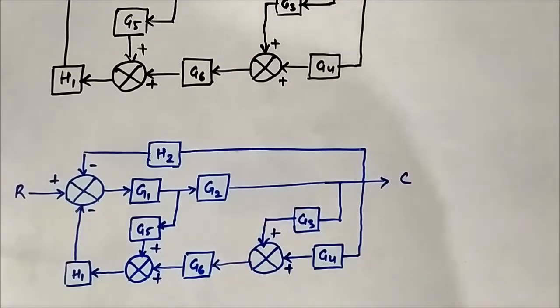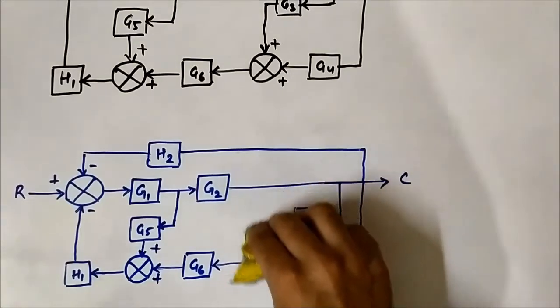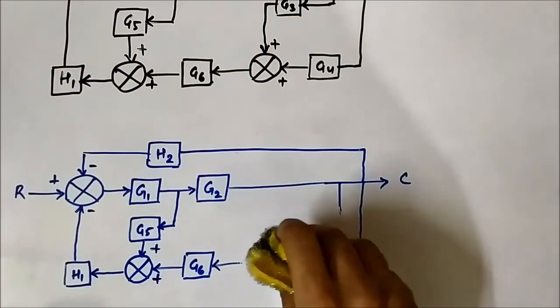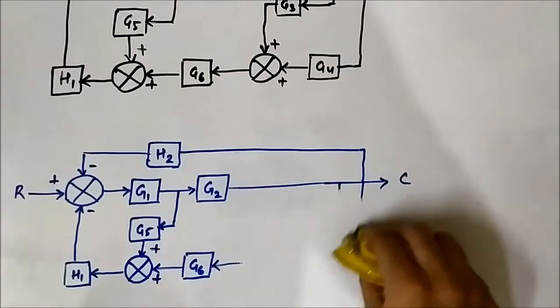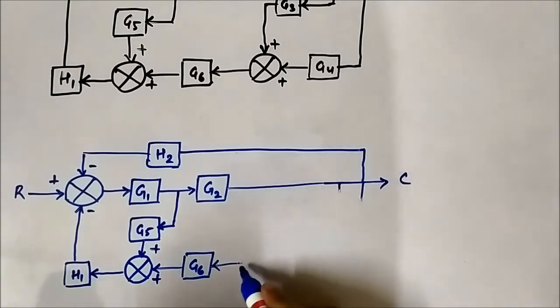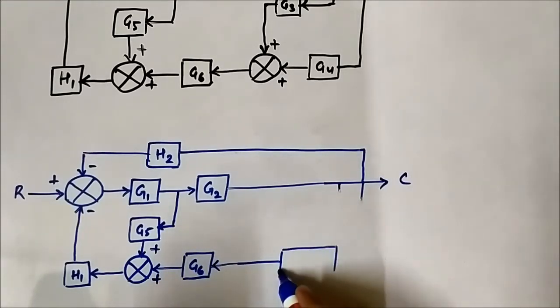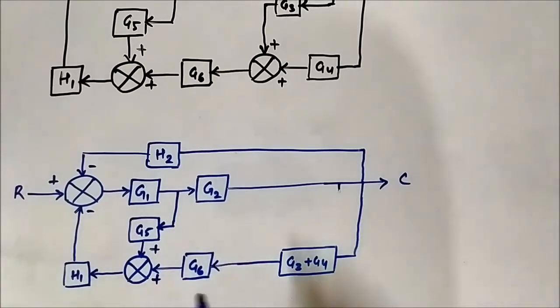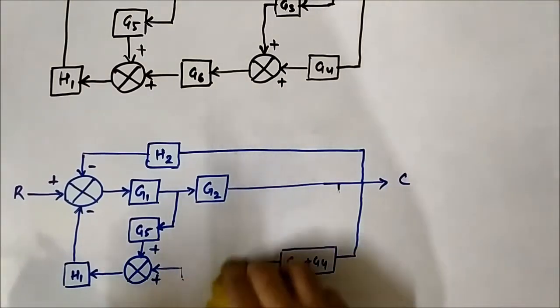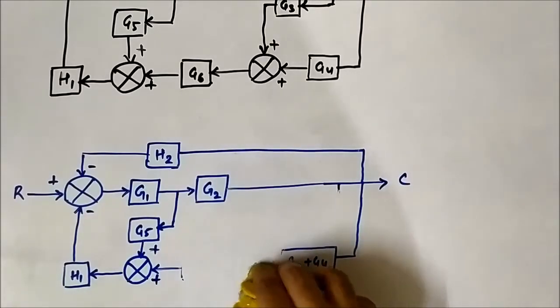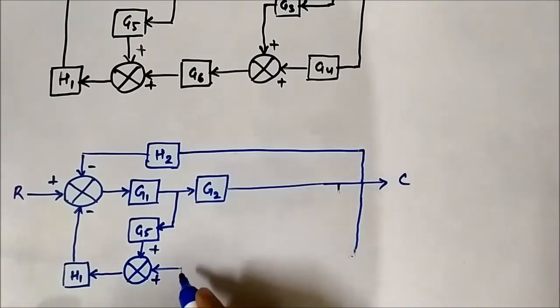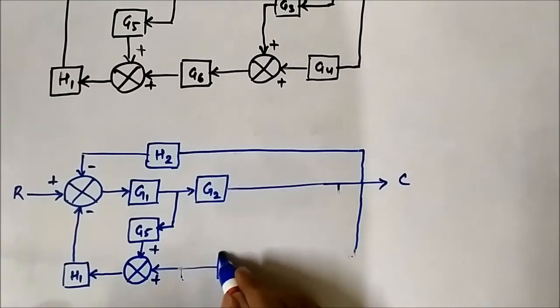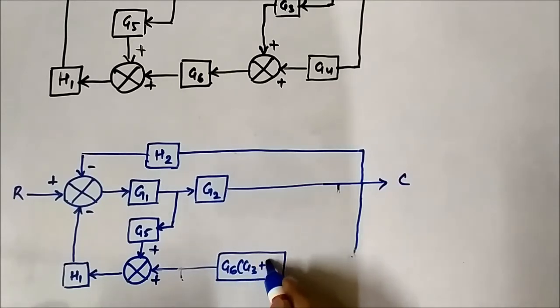Directly we can make a change here which will look like this: G3 plus G4. Directly we can make the change. G3 plus G4. Again, G6 and G3 plus G4, they are in cascade, so we can further simplify it.